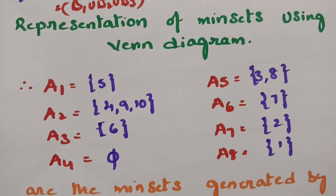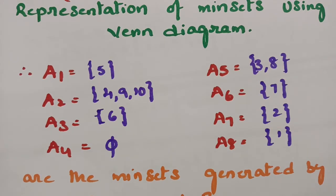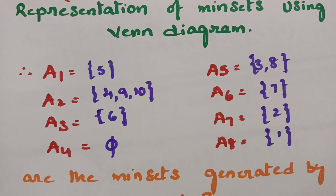These are all the MinSet values, clearly explained. These are the 8 MinSets formed using three subsets. If any problem of this kind is given, you can find the complement and find the MinSets using this formula and diagram. Hope you all understand. If you do, please give a thumbs up, follow this channel — I will be uploading MaxSets in the next video. Please remember to subscribe. Thank you so much.